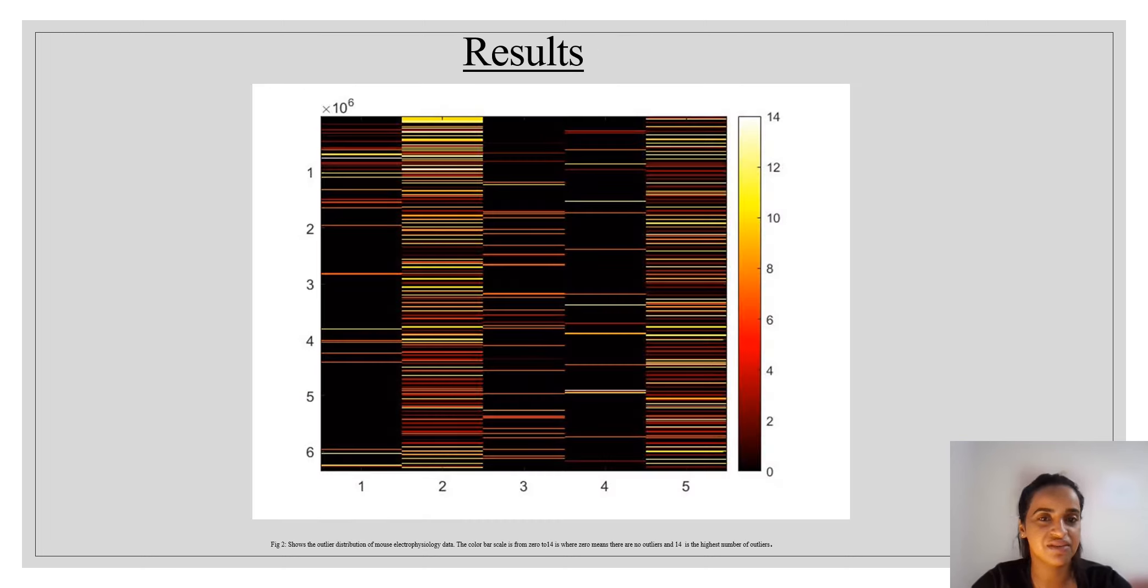So I'm happy that I found something called the matrix of outliers, where I not only test the outlier for each rat, but I test the outlier for a single period of time for all the rats, where zero means there is no outlier, and we go up until the highest number of outliers, which is 14.